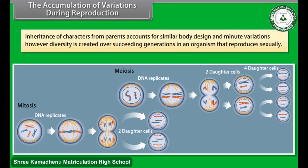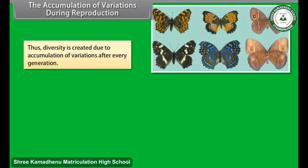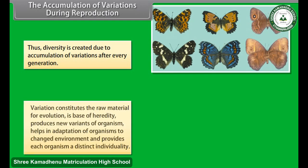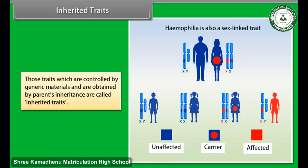Inheritance of characters from parents accounts for similar body design and minute variations. However, diversity is created over succeeding generations. In an organism that reproduces sexually, two individuals from the same parents are different, giving rise to different progeny. Thus diversity is created due to accumulation of variations after every generation. Variation constitutes the raw material for evolution, is the base of heredity, produces new variants of organisms, helps in adaptation to changed environments, and provides each organism a distinct individuality.